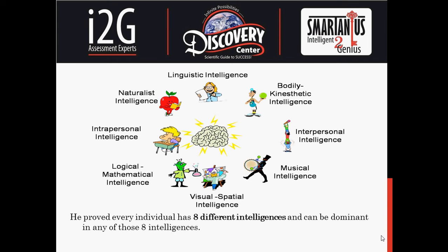The Multiple Intelligences are: Linguistic Intelligence (Word Smart), Bodily-Kinaesthetic Intelligence (Body Smart), Interpersonal Intelligence (People Smart), Musical Intelligence (Music Smart), Visual-Spatial Intelligence (Picture Smart), Logical or Mathematical Intelligence (Math Smart / Number Smart), Intrapersonal Intelligence (Self Smart), and Naturalistic Intelligence (Nature Smart).